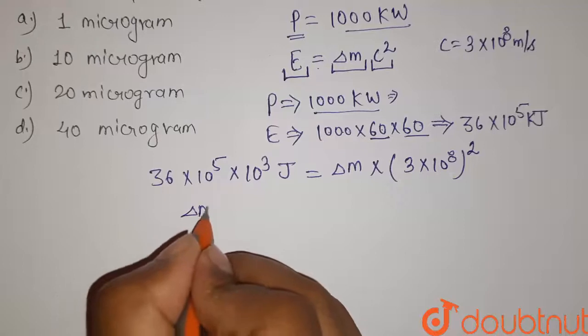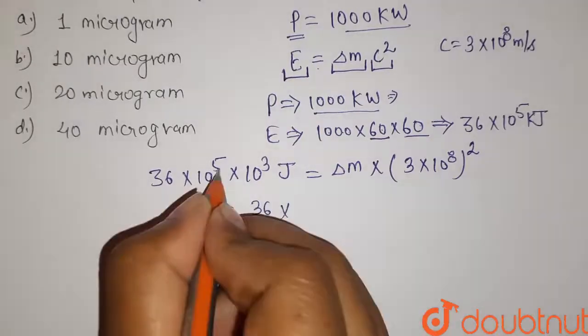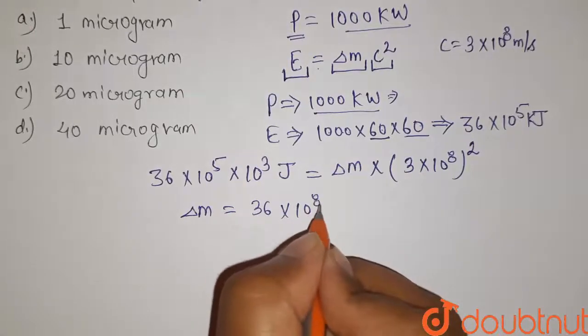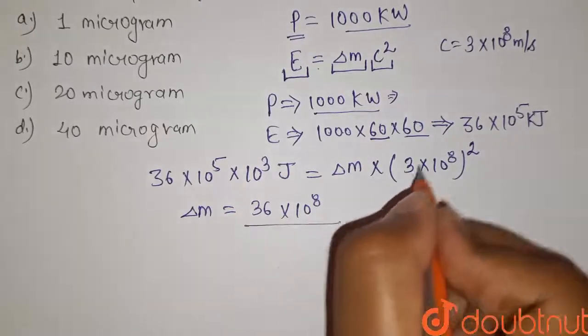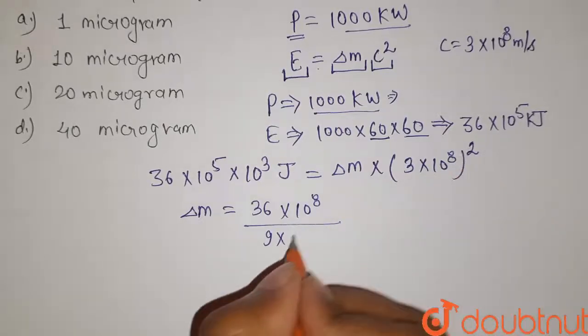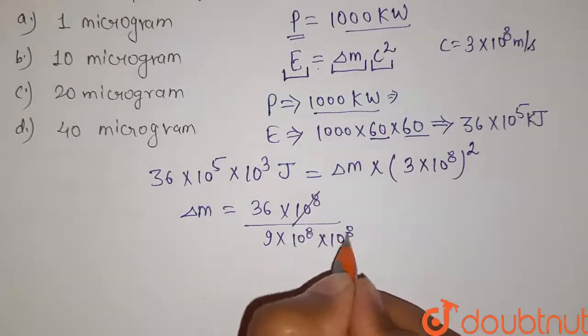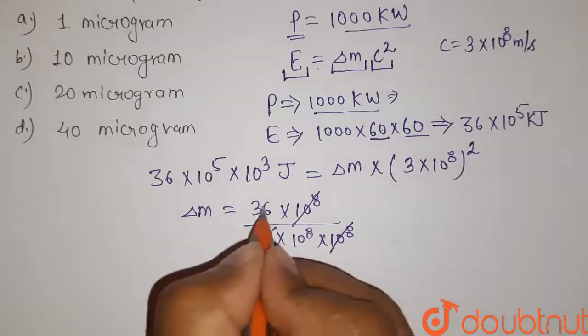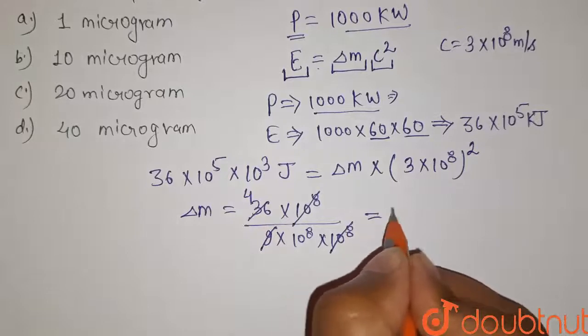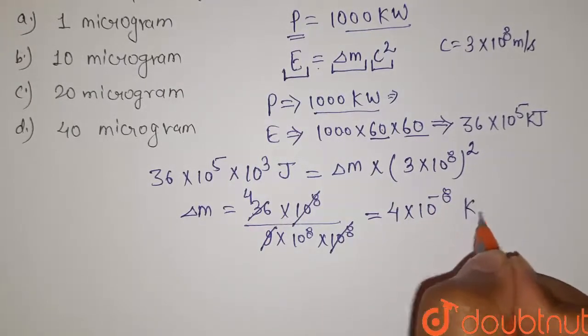So delta m will be... 10 to the power 8 equals 36... here it will be 10 to the power 8 divided by 9 times 10 to the power 8 times 10 to the power 8. So here it will get canceled out, and here it will be 4. So we will have 4 times 10 to the power minus 8 kilograms.